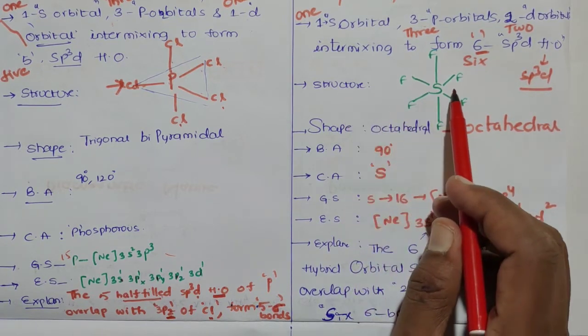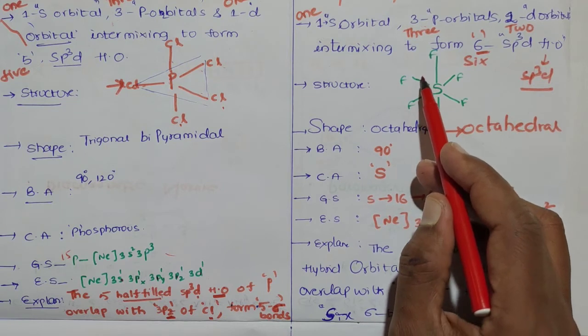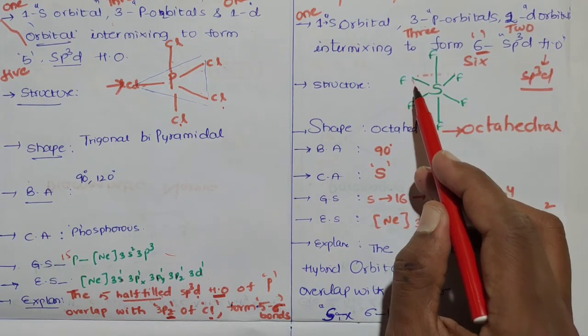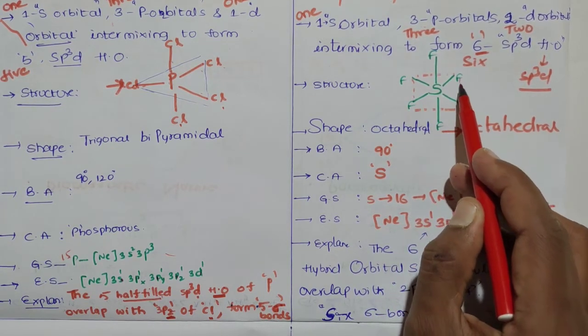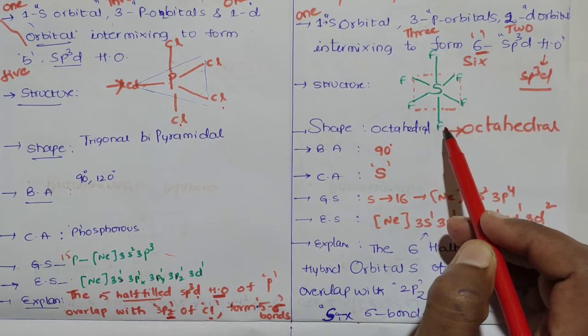First definition, then structure. The structure is octahedral. Four fluorines are in plane, one fluorine above the plane, one fluorine below the plane.